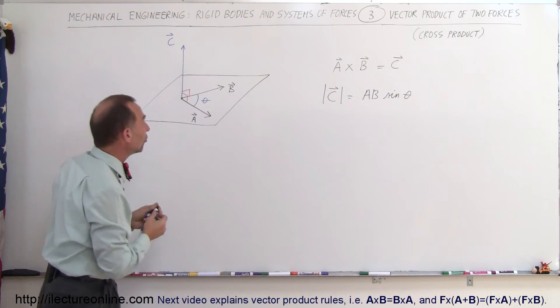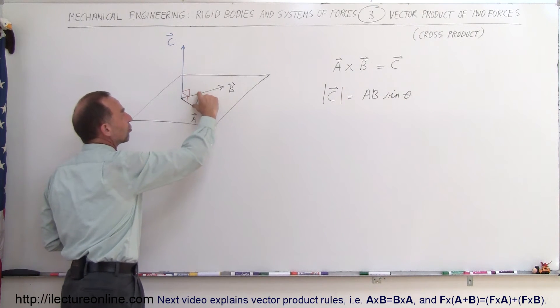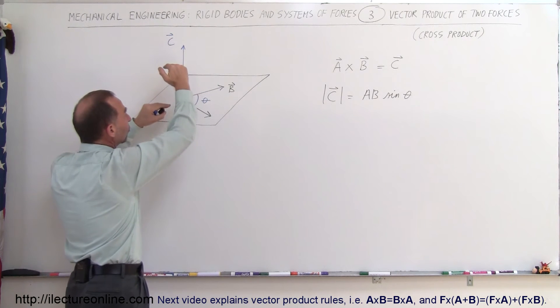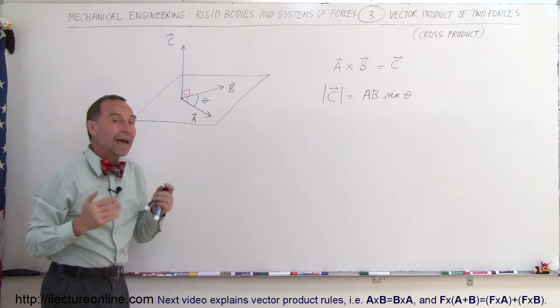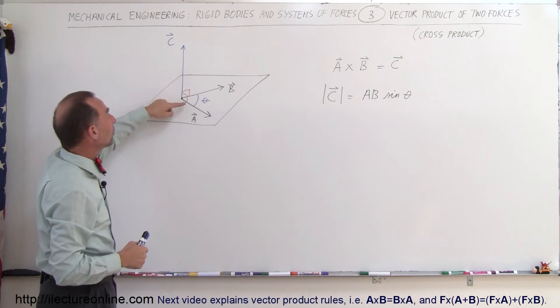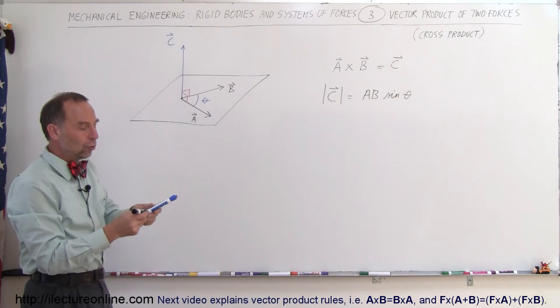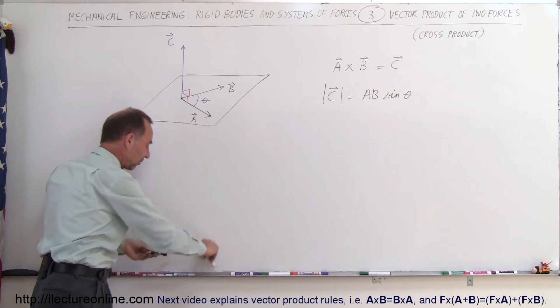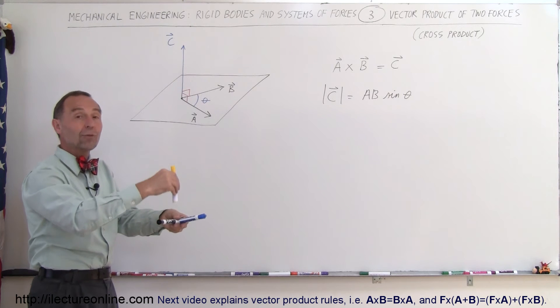Now that's kind of interesting because notice as the angle gets smaller, the sine of the angle gets smaller and the magnitude of vector C will get smaller as well. The maximum size of the vector will be when the angle is equal to 90 degrees. So when the two vectors are perpendicular to one another like this, then the third vector, vector C, will be its maximum value.